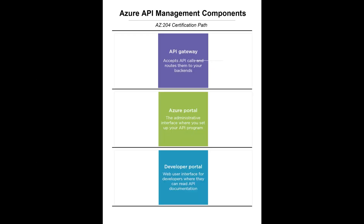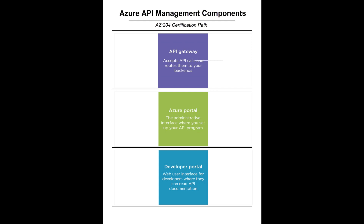Now let's take a look at the Azure API Management components. There are three components: API Gateway, Azure Portal, and Developer Portal. The API Gateway accepts the API calls and routes them to the backend. The Azure Portal is the administrative interface where you set up all your API programs for the API management. The Developer Portal is for consumers — developers who want to consume the APIs you are hosting behind the API management.